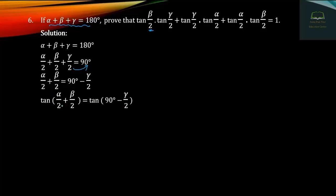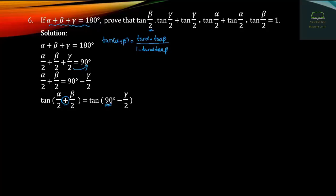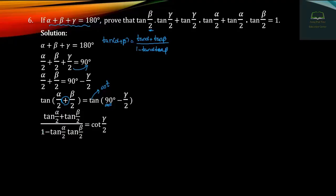We have a formula here. Since α + β + γ = 180 degrees, we know that α + β = 180 minus γ. Using the tan addition formula: tan(α/2 + β/2) equals tan(α/2) plus tan(β/2) divided by one minus tan(α/2)·tan(β/2), equal to the expression we need.